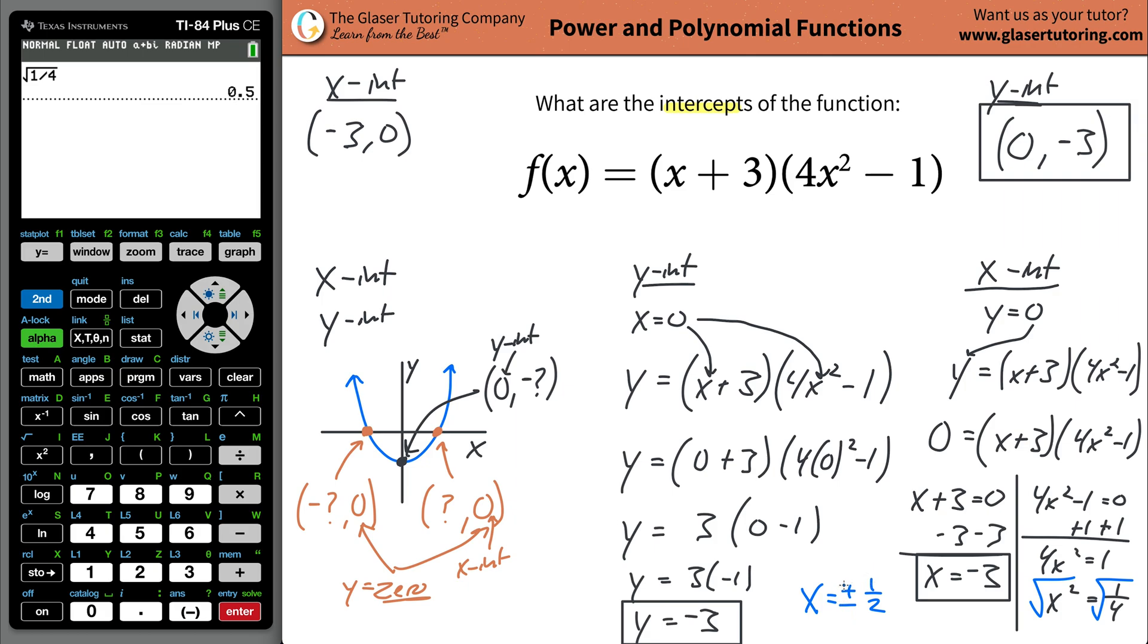But for our purposes here, I want to include both because technically speaking, if you were to take negative 1/2 and you squared it, it would come out to be positive 1/4, which is what we said over here.